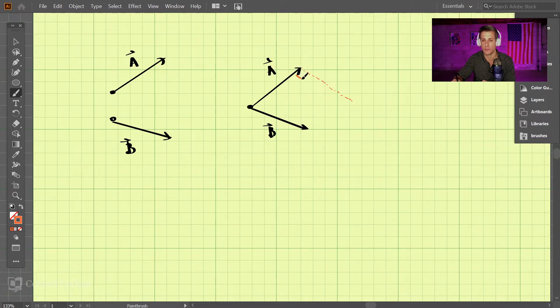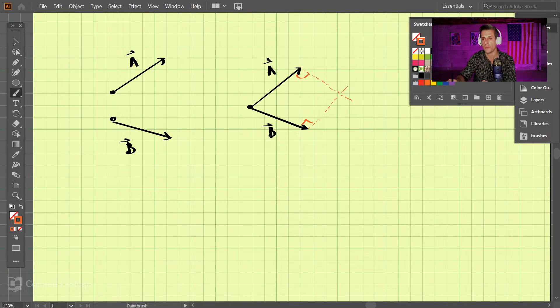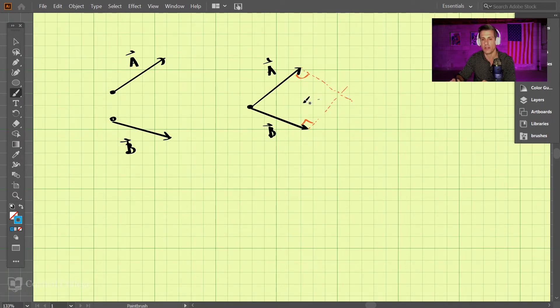And this one's also supposed to be 90 degrees there. And then what we get from that, right where those two intersect, is the vector. Well, this vector here to the point where they intersect, so where the tails are connected to the vector, to where they intersect, that is our resultant vector.